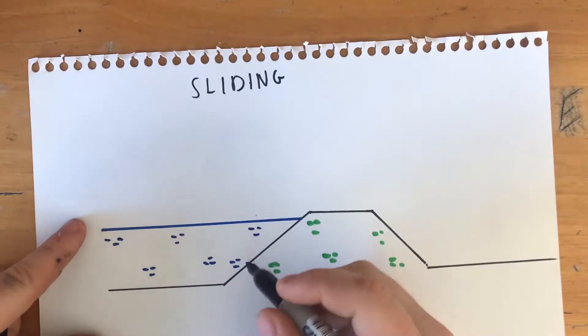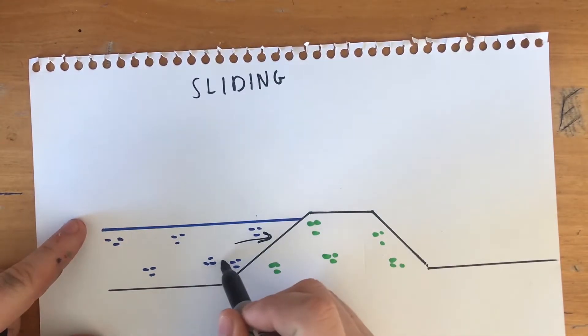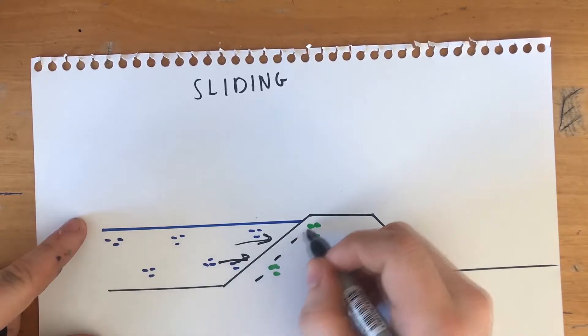Sliding. This occurs when the horizontal force created by the water pushes the earthen dam over its foundation.